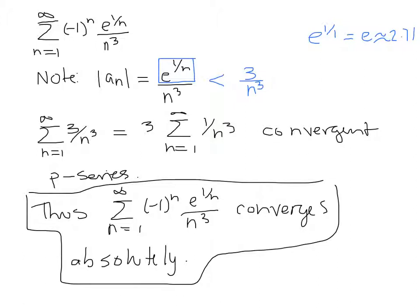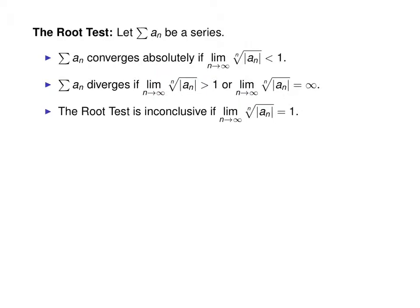Another useful test is called the root test. This test is very useful when you have things raised to powers, and the conclusions are very similar to those of the ratio test. A series converges absolutely if the limit as n goes to infinity of the nth root of |a_sub_n| is less than 1. It diverges if that limit is greater than 1 or infinite, and the test is inconclusive if the limit equals 1.